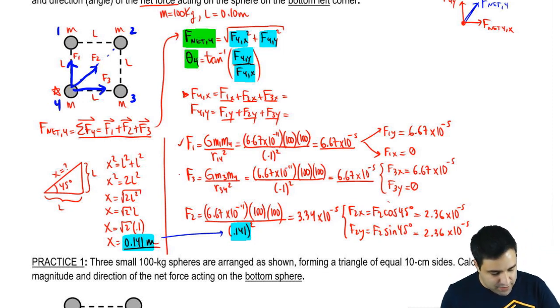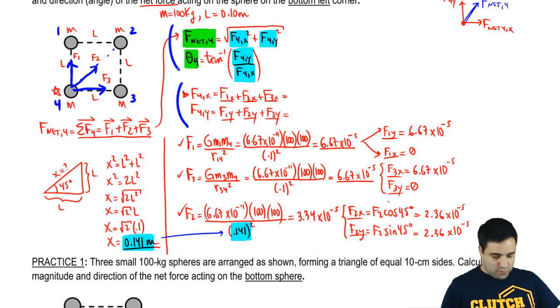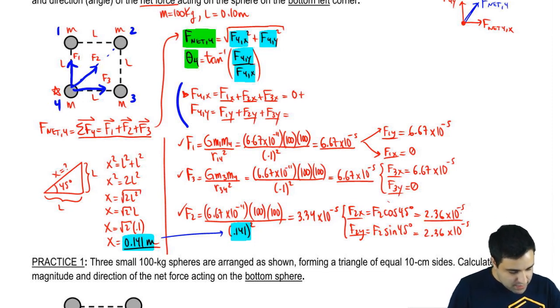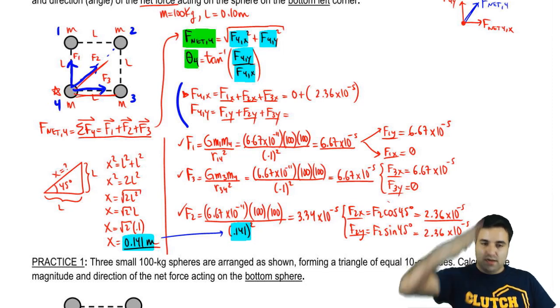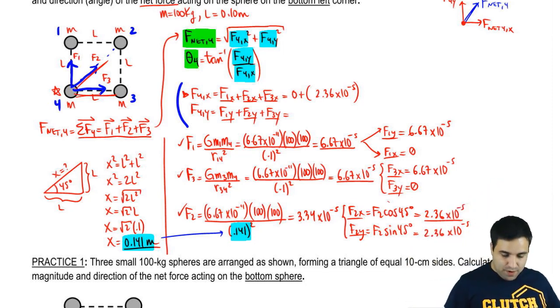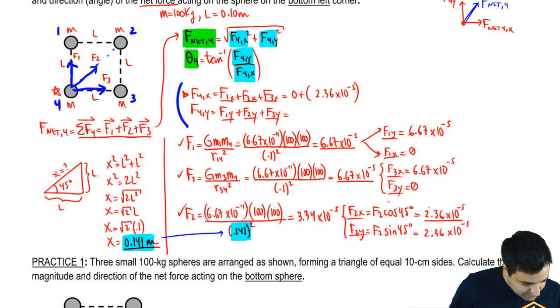Really long. But once I found F1, F2, and F3, and I found the X and Y components, I am now ready to just piece everything together back in here. So F4X: this is now just plugging it in. F1X is 0. F2X is, F2X is over here, is 2.36 times 10 to the negative 5th. Now, as you do this, remember you have to worry about positives and negatives. If you look at F2X, F2 is going this way. F2X is to the right. So it will be positive.